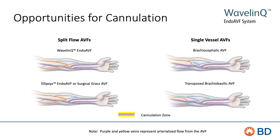Most surgical AV fistulas result in a single outflow vein, limiting the potential cannulation of vessels. The Wavelink Endo-AVF is created in the deep forearm, and a perforating vein carries the outflow up to the superficial system, thus arterializing multiple upper arm veins. This may result in several available vessels for cannulation, including the potential for a split-flow fistula arm.